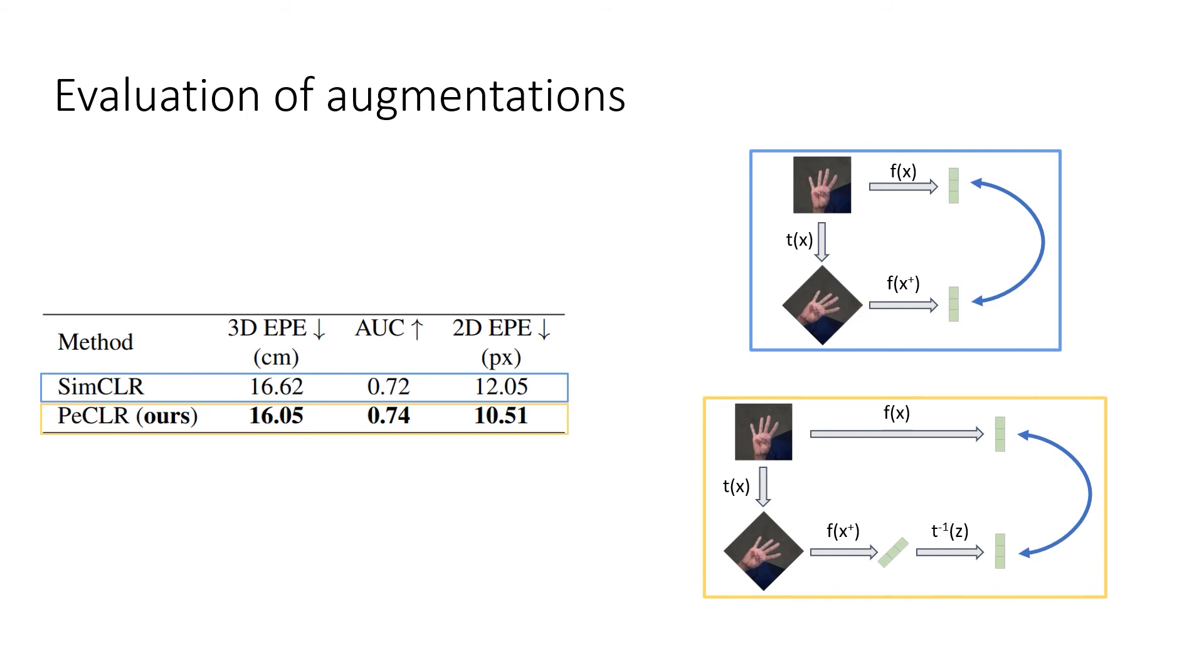Next, we identify the optimal performing augmentation schemes for both SimCLR and PECLR using exhaustive search. We pre-train both models using the respective optimal augmentation strategies and evaluate the resulting feature representation as before. We see that PECLR outperforms SimCLR by a clear margin.